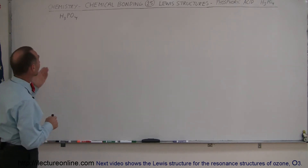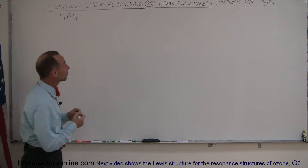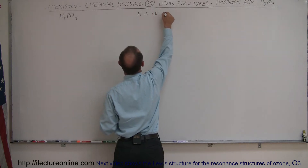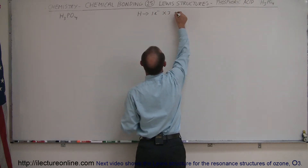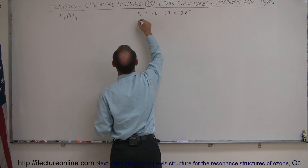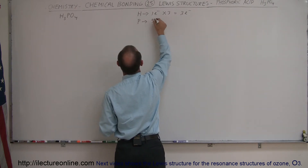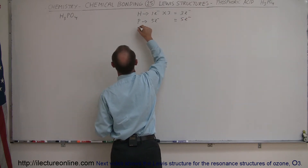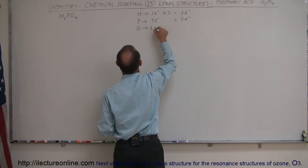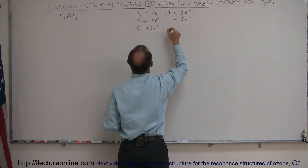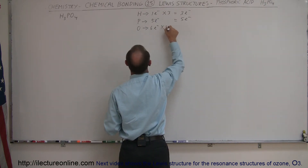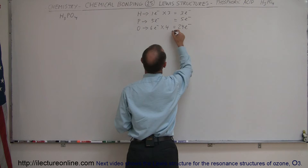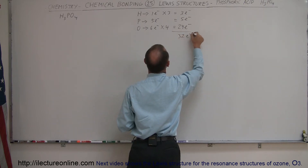Let's start out by figuring out what kind of atoms we have in our structure. We have hydrogen, which has one valence electron, and there are three of them, giving us three valence electrons. We have phosphorus, which has five valence electrons, and there's only one of those. Then we have oxygen, which has six valence electrons, times four, giving us 24 valence electrons. The whole thing together is 32 valence electrons.